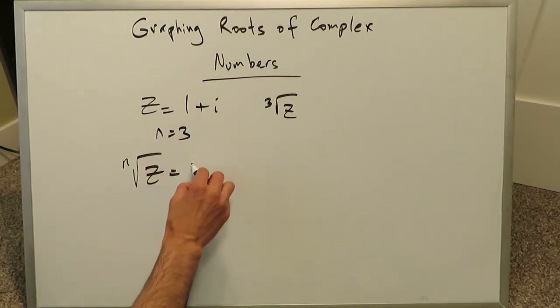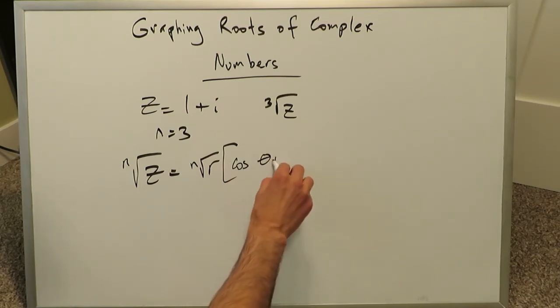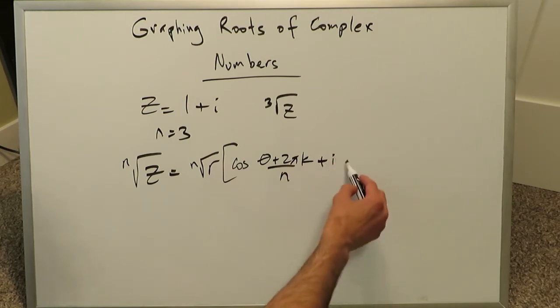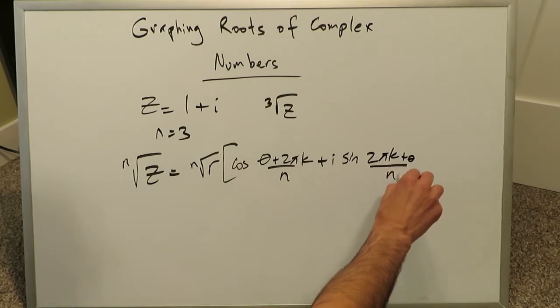The nth root of a complex number is equal to the nth root of your modulus. And you're going to multiply that by this item, or the set of items within the parentheses being shown over here. Cosine theta plus 2 pi k over n plus i times sine 2 pi k plus theta over n.